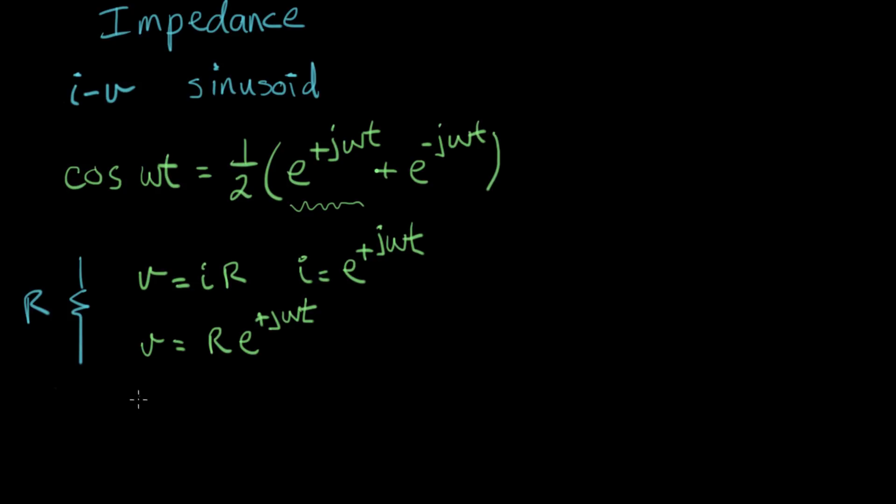So if this is I, what is V for a resistor? Well, we just plug I in here and we get V equals R times e to the plus j omega t. I want to look at the ratio of voltage to current in this situation where we're driving with this complex exponential. And these two are the same, so they cancel.